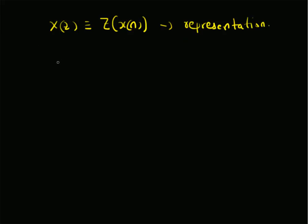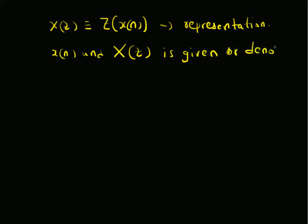The Z-transform relation between x(n) and X(z) is denoted by a double-headed arrow with the variable z at the top, indicating that x(n) and X(z) are a Z-transform pair. That is, X(z) is the Z-transform of x(n) and x(n) is the inverse Z-transform of X(z).